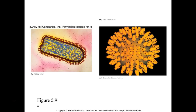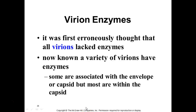Here are some examples: the hepatitis virus with its spikes, and the rabies virus, which has a very characteristic bullet shape and characteristic spikes. At first we thought viruses lacked enzymes, but we found that some have enzymes associated with the envelope or capsid — and even some within that protein capsid coat — that can catalyze specific reactions.